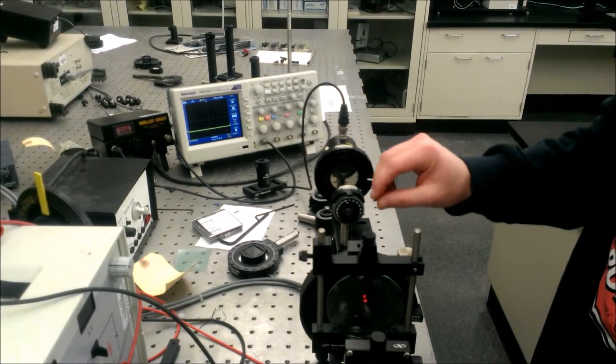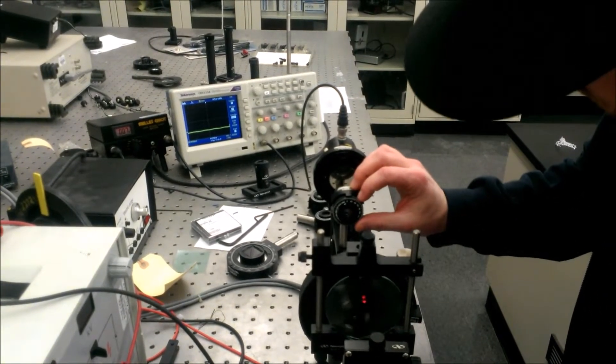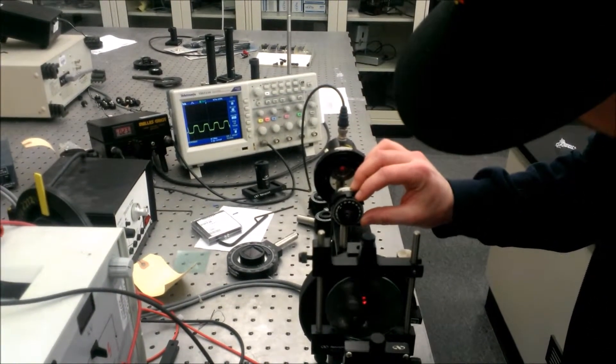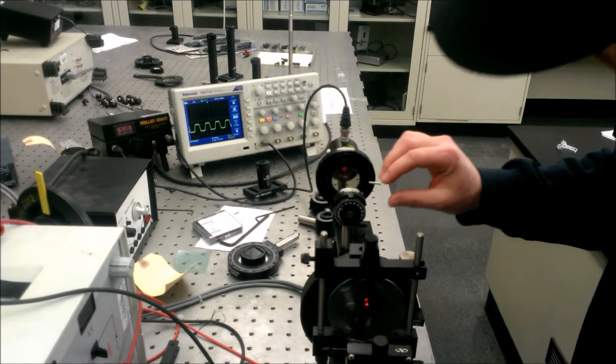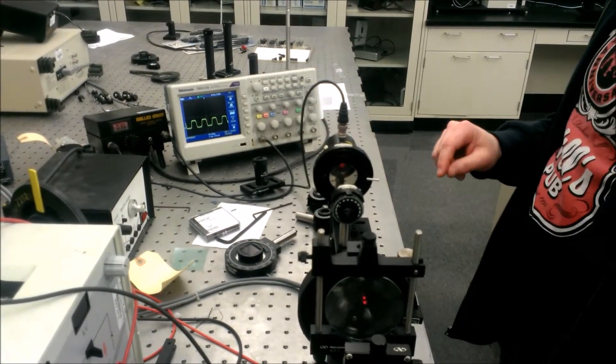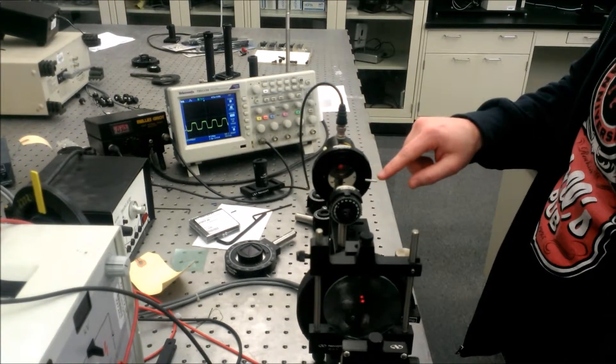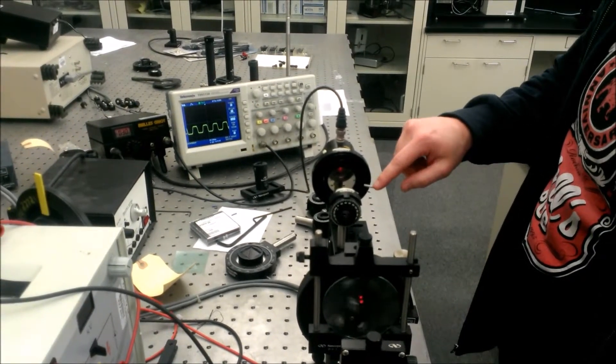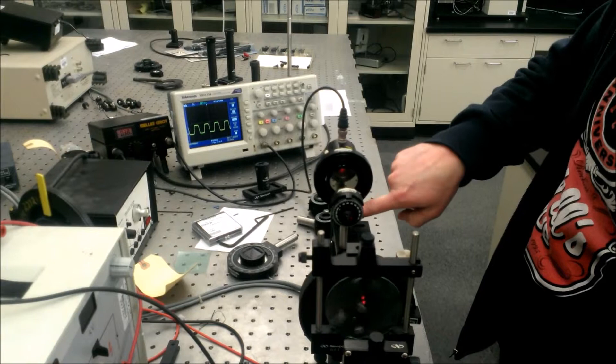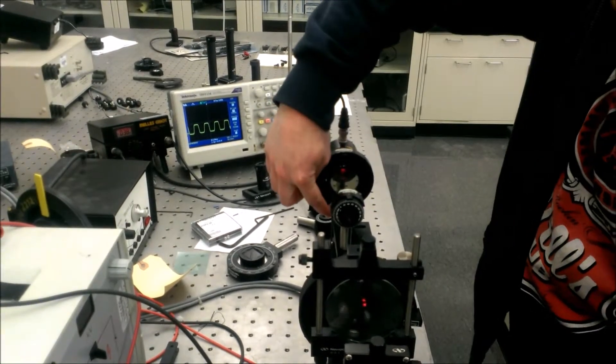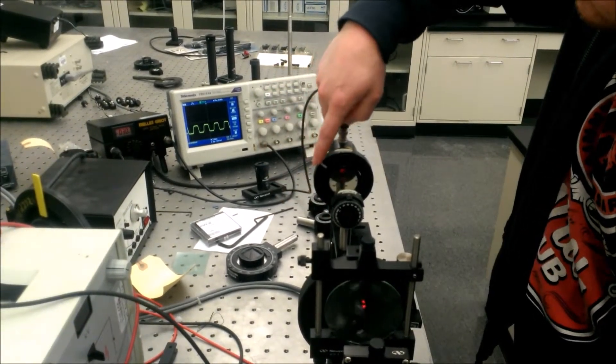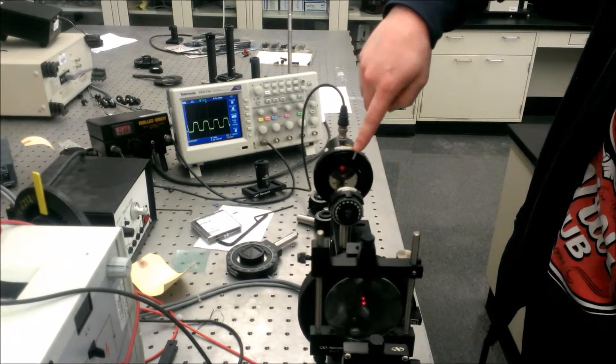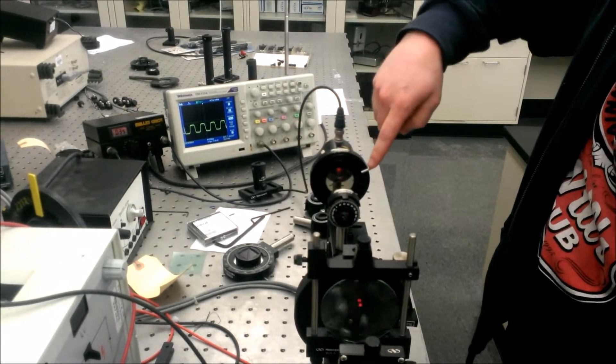And you should notice that as you go in 30 degree increments, around the 360 degree rotation on the analyzer, that the amplitude is roughly the same, indicating circularly polarized light.